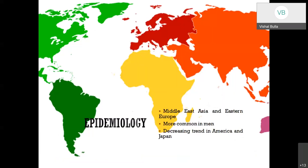Looking at the epidemiology, most patients of Buerger's disease are found in the Middle East, Asia, and Eastern Europe. Its striking characteristic is that it is more common in men; however, this gender discrimination is fading away as more women in the modern world are inclined towards smoking. There is a decreasing trend in the United States and Japan, with approximately 10 to 12 cases per 100,000 in America, and the ratio reduced from approximately 1:3 to 1:10 in Japan.